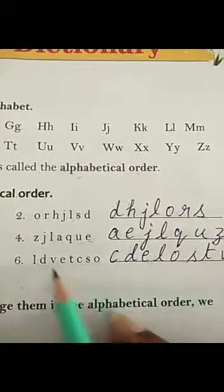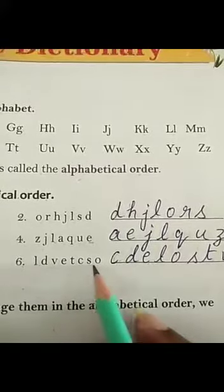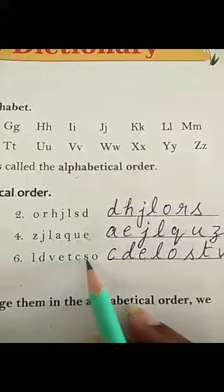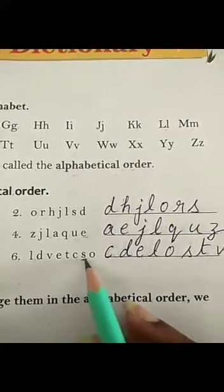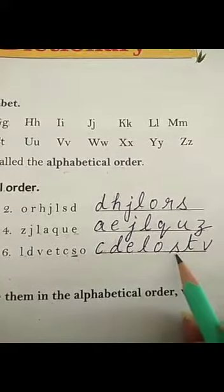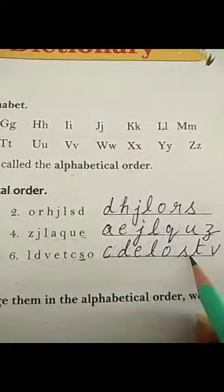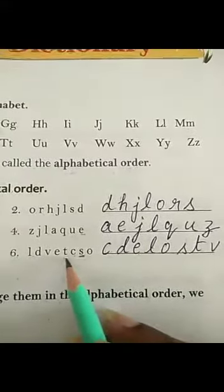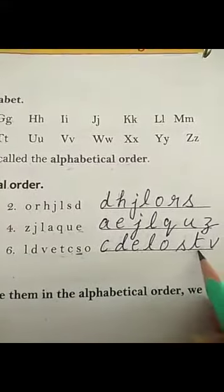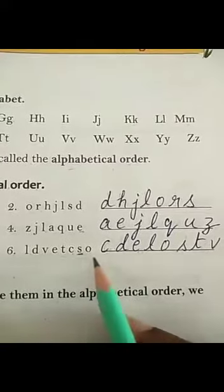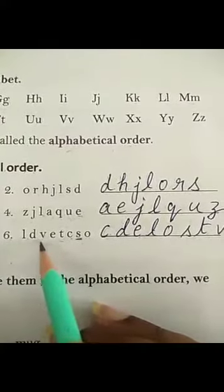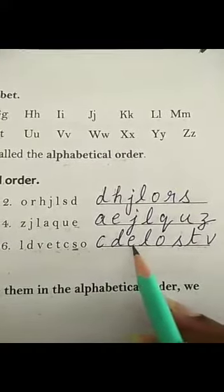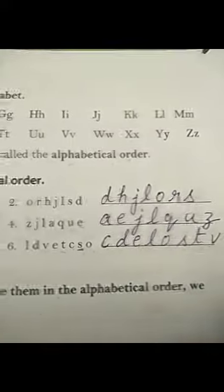After O, P comes but P is not present here. Q is also not present here. R is also not here. S — yes, we have S. So we will write S after O. After S, what comes? T. T is here. So we will write T. U is not present here. We have V. So we will write V after T. Now the order will become C, D, E, L, O, S, T, V.